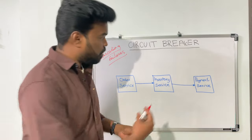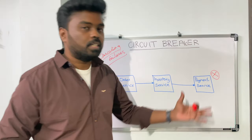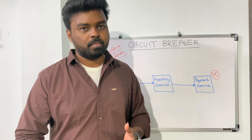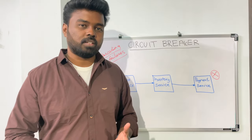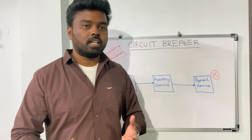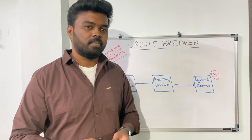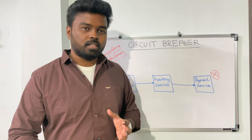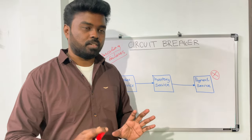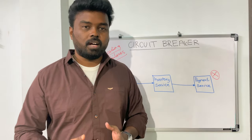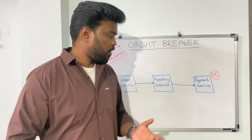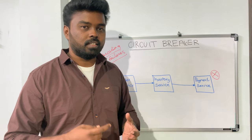Now assume there is some issue in the payment service — maybe the service itself has a problem, the virtual machine hosting it has some issue, or it doesn't have enough capacity to handle more requests. The inventory service will send requests to the payment service, but the payment service cannot handle all those requests as fast as it usually does. With many users placing orders, lots of requests come to the system, but the payment service cannot respond. At the inventory service side, all the requests will get into the waiting queue.